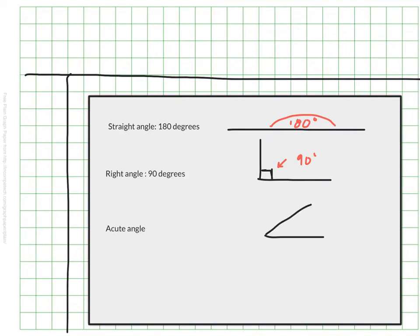An acute angle is where two line segments meet and it is less than 90 degrees. Whereas an obtuse angle, you can see these two lines meet in something that is larger than 90 degrees.